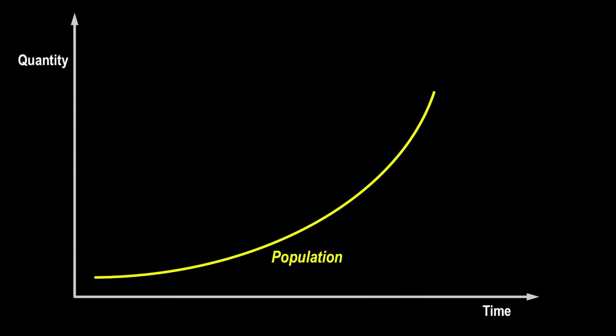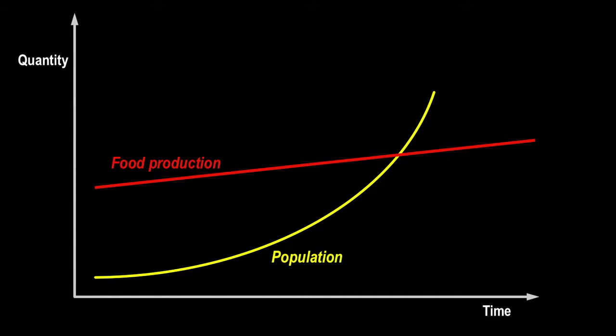According to Malthus, population tends to increase faster than the supply of food available for its needs. Whenever a gain occurs in food production, it results in higher population growth. Over time, population growth will exceed the increase in agricultural production and population will crash due to food shortages.